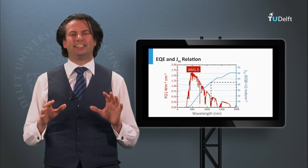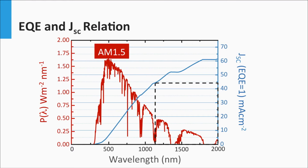Let's consider the design rules for solar cells as introduced in week 3. Starting with spectral utilization: a band gap of 1.12 eV means that in theory we can generate a maximum short circuit current density of 45 mA per square centimeter using crystalline silicon.